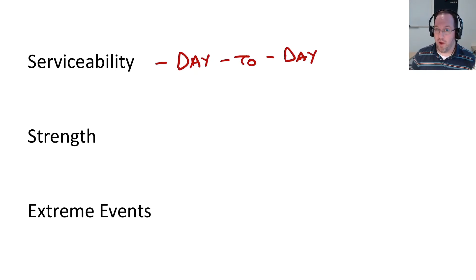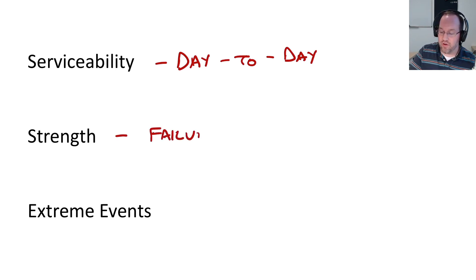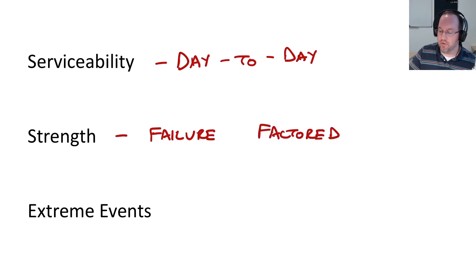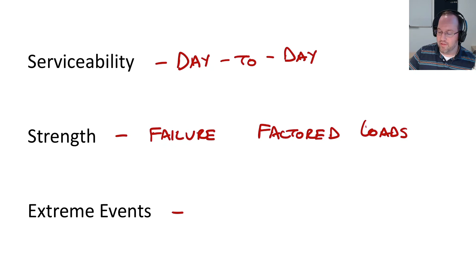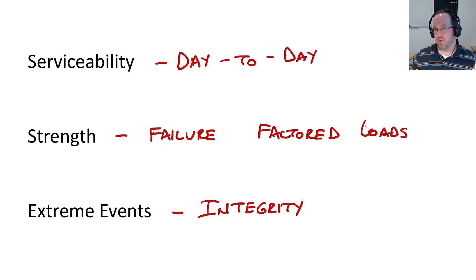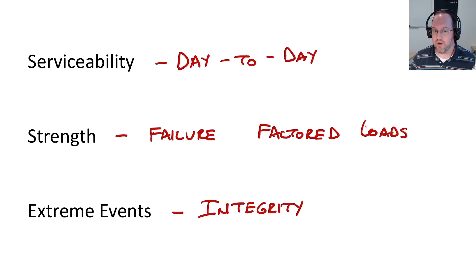Up next, and what is the primary concern for many engineers, is the strength case. This is really looking at failure of our structure. We're going to be using something called factored loads here to account for the larger loads that are going to be applied in this failure state. Lastly, we'll look at extreme events — this is really looking at the integrity of our structure after some damaging event, such as a blast or an impact. We know our structure is probably not going to survive it, but we want to make sure that life safety of the occupants is our primary concern, so the structure stays intact and does not collapse.